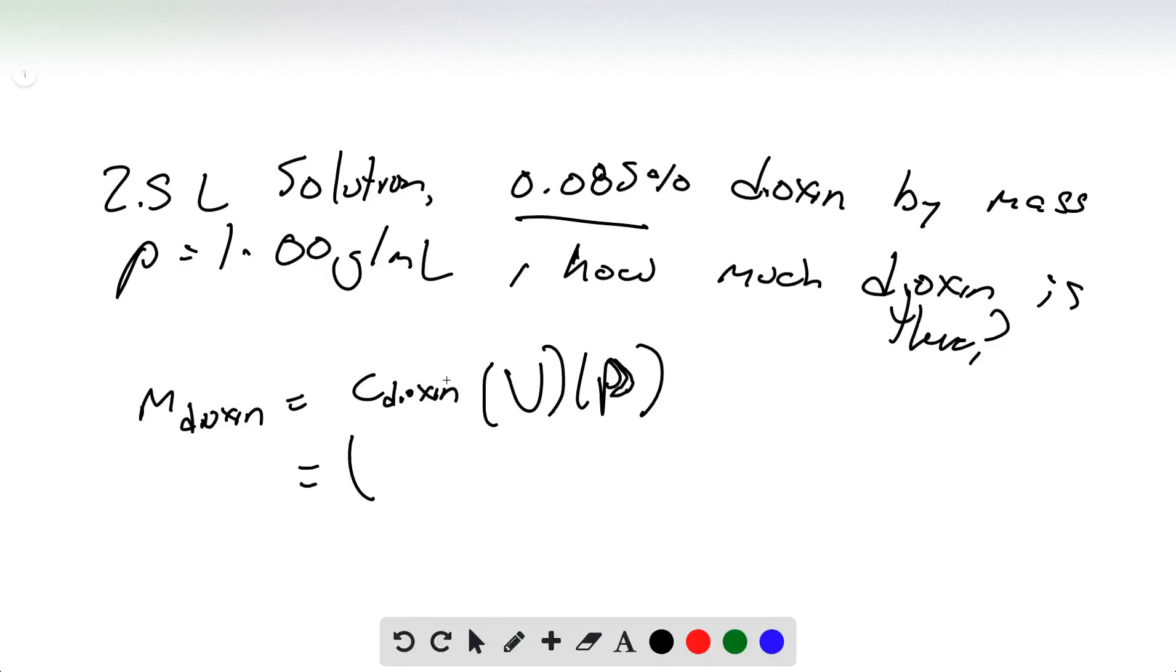So, 0.085%, just divide that by 100 to get 0.00085, and this is going to be 2.5 liters.